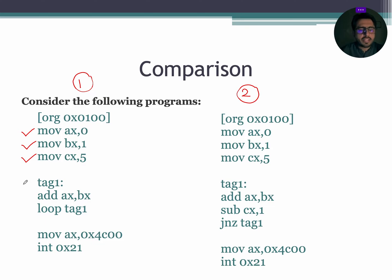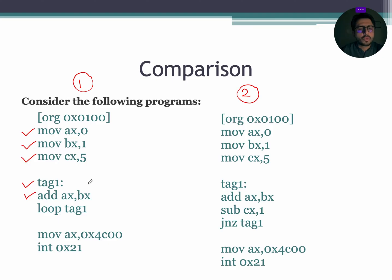Next instruction is our directive, so we are not going to execute this and we are going to move to the next instruction which is ADD AX, BX. This instruction will yield the sum of AX and BX registers. Presently, the data stored in AX is 0000 and BX is 0001, so 0000 plus 0001 will yield 0001.